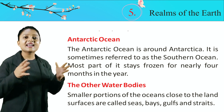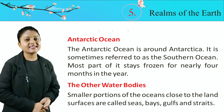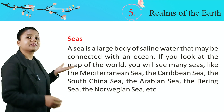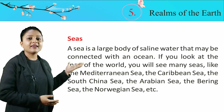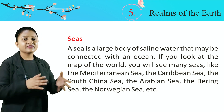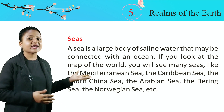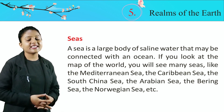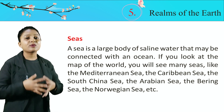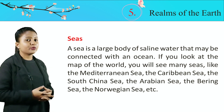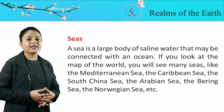Other Water Bodies. Smaller portions of the oceans close to the land surfaces are called seas, bays, gulfs, and straits. Seas: A sea is a large body of saline water that may be connected with an ocean. On the map, you will see many seas like the Mediterranean Sea, the Caribbean Sea, the South China Sea, the Arabian Sea, the Bering Sea, the Norwegian Sea, etc. Sea ek bahut badi water body hoti hai, saline water ki, but oceans ki comparison mein choti hoti hai.